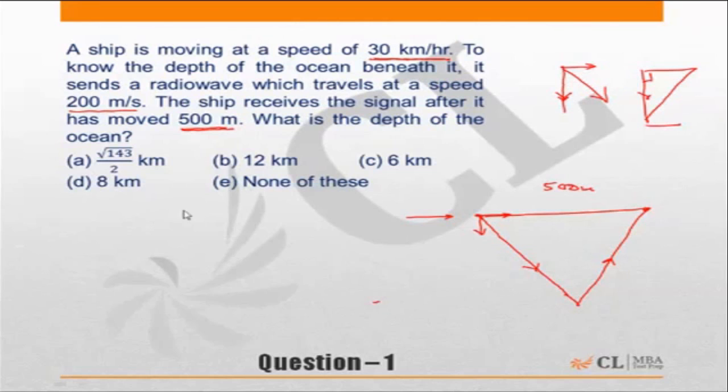What will be the depth of the ocean? The depth of the ocean will be the perpendicular of this right-angled triangle. First we need to find out what is the time taken by the ship to cover this distance of 500 meters. Using that time calculate the distance the radio wave would have traveled because the speed of the radio wave is given.